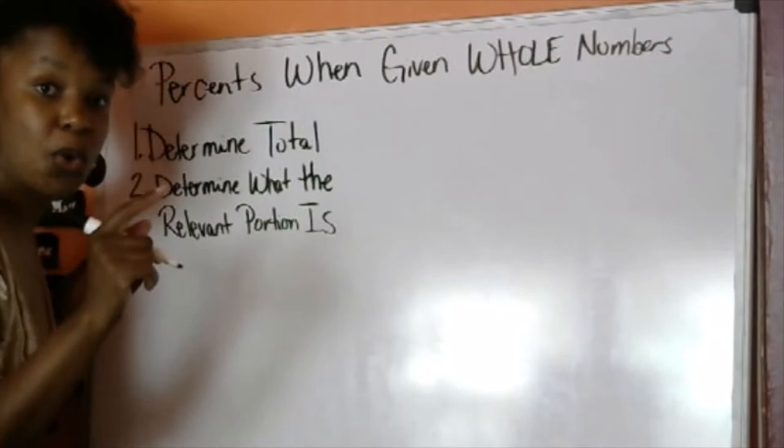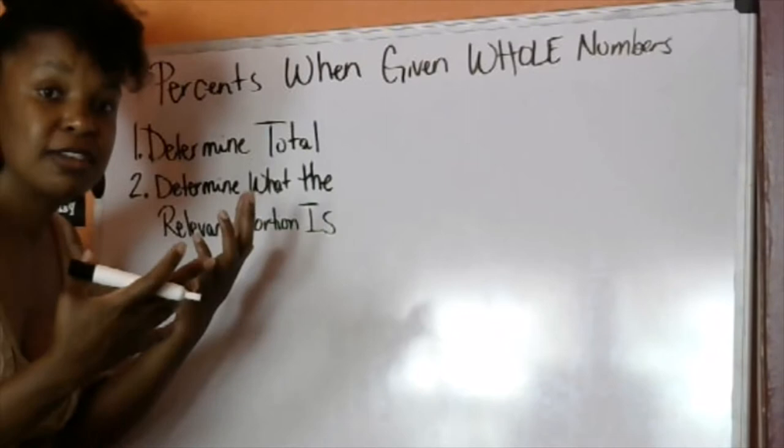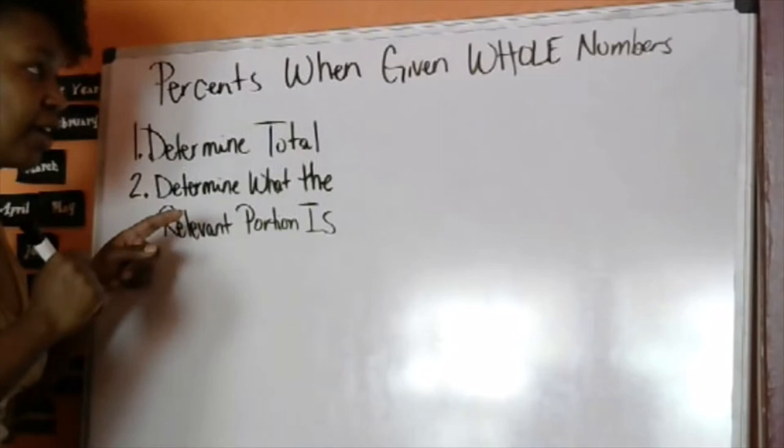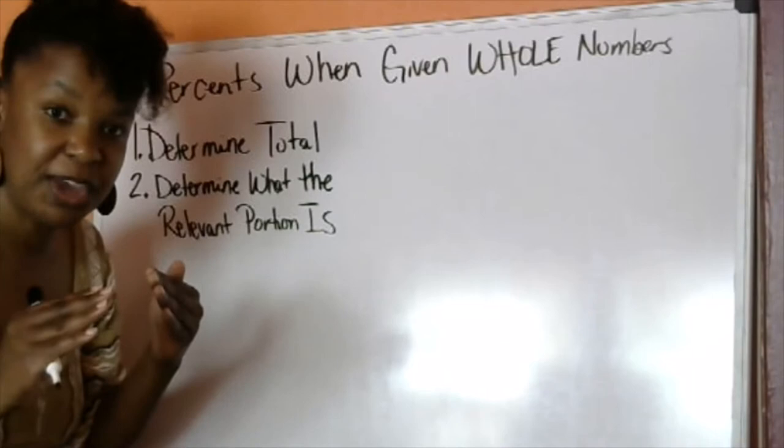Step 3, you are going to divide the portion by the total. It seems counterintuitive because usually we divide larger numbers by smaller numbers. But if we understand the nature of percents, and we'll talk about that in another video, we understand that we are trying to spread this whole number out across smaller pieces.